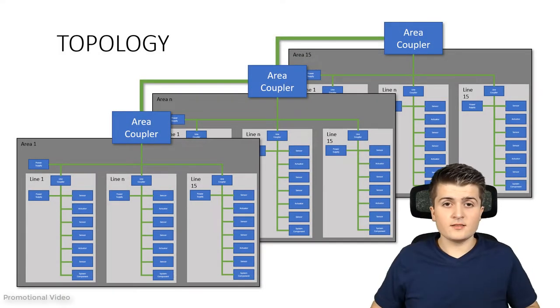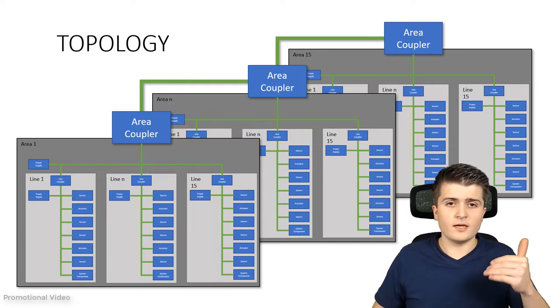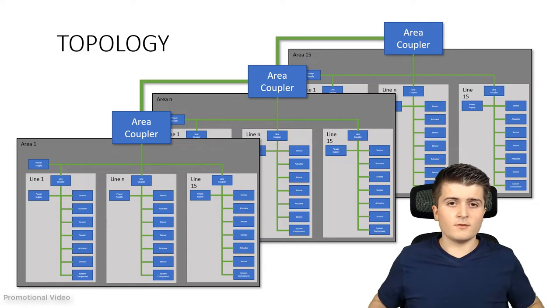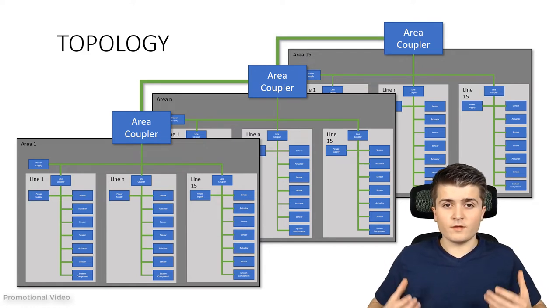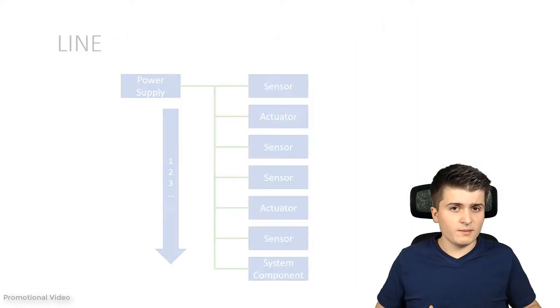The network structure in KNX is divided into three different levels. First of all we have the smallest one, the so-called line. Above the line we then have the area, so with the area we combine multiple lines together. And on top of the area we have the so-called backbone. With the backbone we can connect multiple areas together. But what means line, area, backbone?